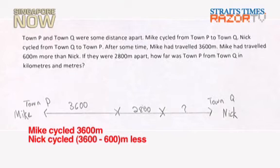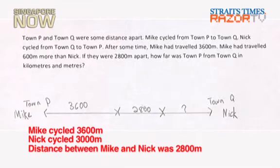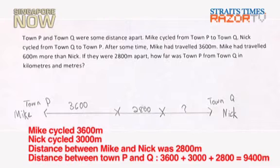So after that, I get Nick's total amount of how many meters he ran. Then they say if there were 2,800 apart, then how far was Town P and Town Q in kilometers and meters? So I just plus all of the numbers together and they give me 9,400.